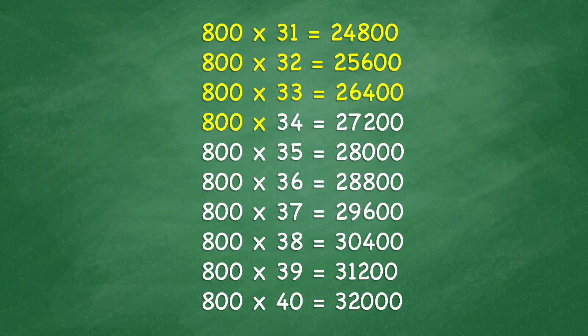800 times 34 equals 27,200. 800 times 35 equals 28,000. 800 times 36 equals 28,800.